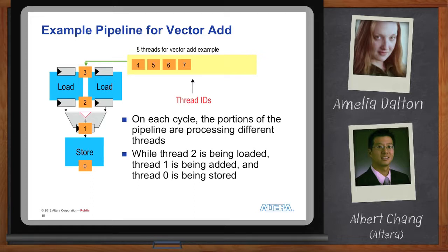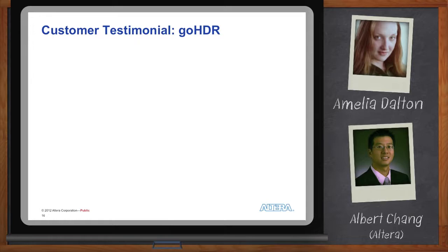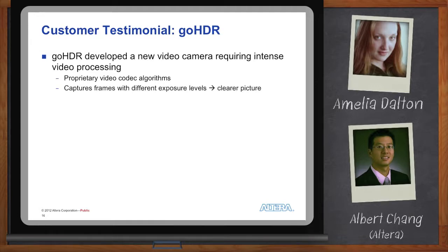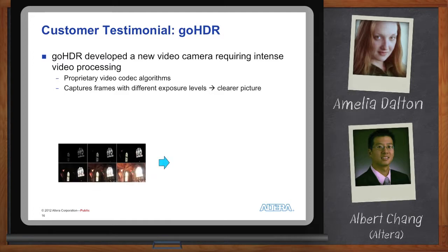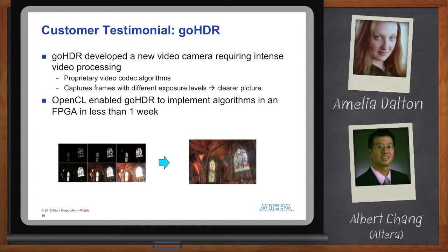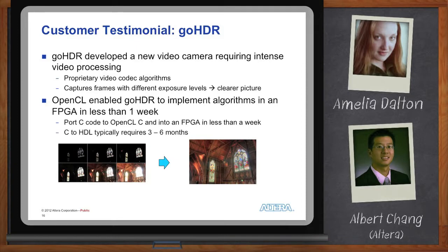As an application example, GoHDR is a company that developed a new video camera requiring intensive video processing — using their own proprietary video codec algorithms that require high performance. Running this on a processor didn't meet the performance or power requirements, so they looked to an FPGA. Because they were writing their algorithms in C, they were able to easily port their C code to OpenCL in less than a week. Without Altera's OpenCL solution, a hardware designer would have to manually convert the C algorithm into HDL, which can take anywhere between three to six months.